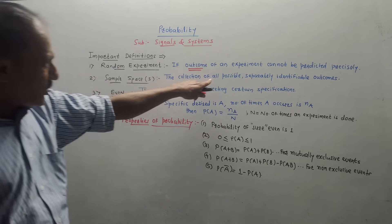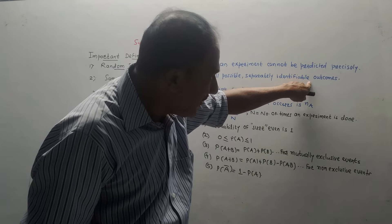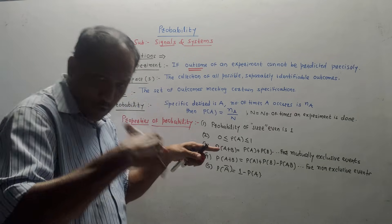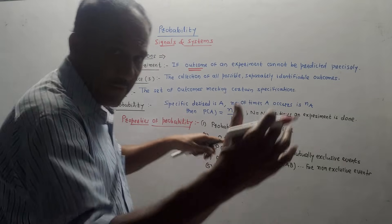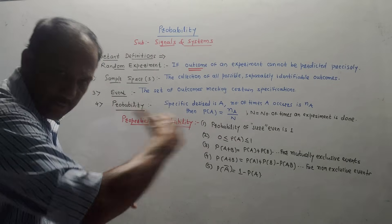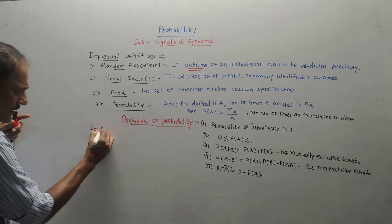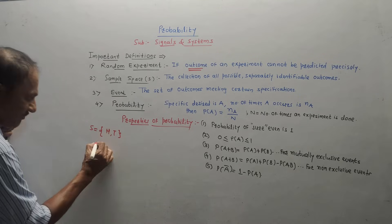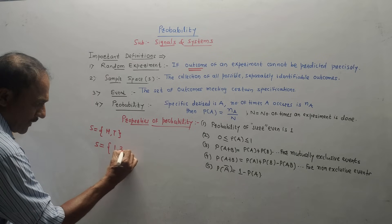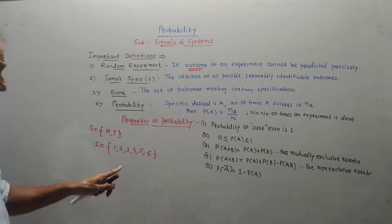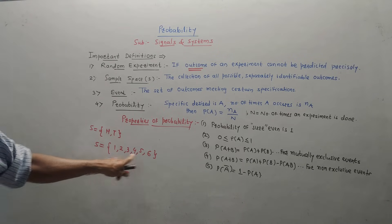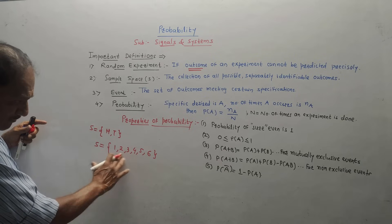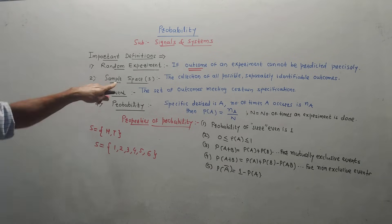Next is sample space. The collection of all possible, separately identifiable outcomes of an experiment is called sample space. For example, if you are throwing a die, the output will be 1, 2, 3, 4, 5, or 6. The output can be any number from 1 to 6. This particular collection of all possible outputs, which are separately identifiable, is called sample space S.